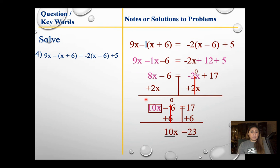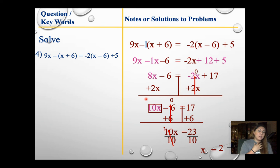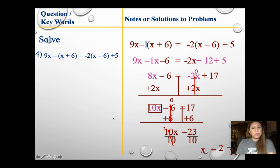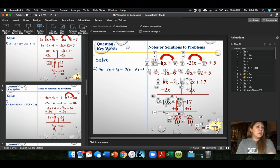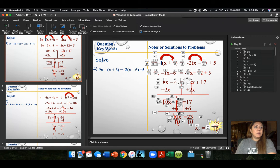I'm going to divide both sides by 10. I can't simplify 23 over 10 any further — I can't divide both by 2, 3, or 5. So we're going to leave it as 23 over 10. Please do not convert this into a mixed number or a decimal — leave it as 23 over 10. It is perfectly fine to leave it like that in an algebra class.